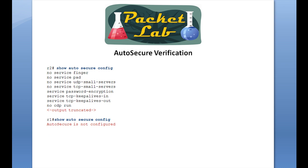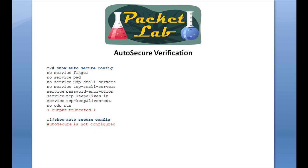Much like there's only one command to enable auto secure, there's really only one command to verify it: show auto secure config. Note that 'config' is not short for configuration — that entire command is spelled out. If you issue this on a router where auto secure was not configured, it'll show you that auto secure is not configured.